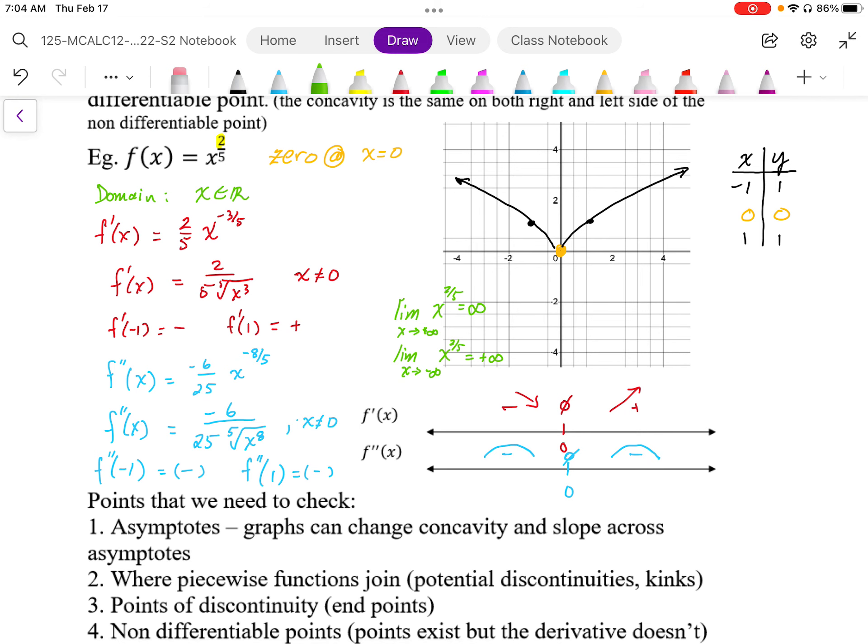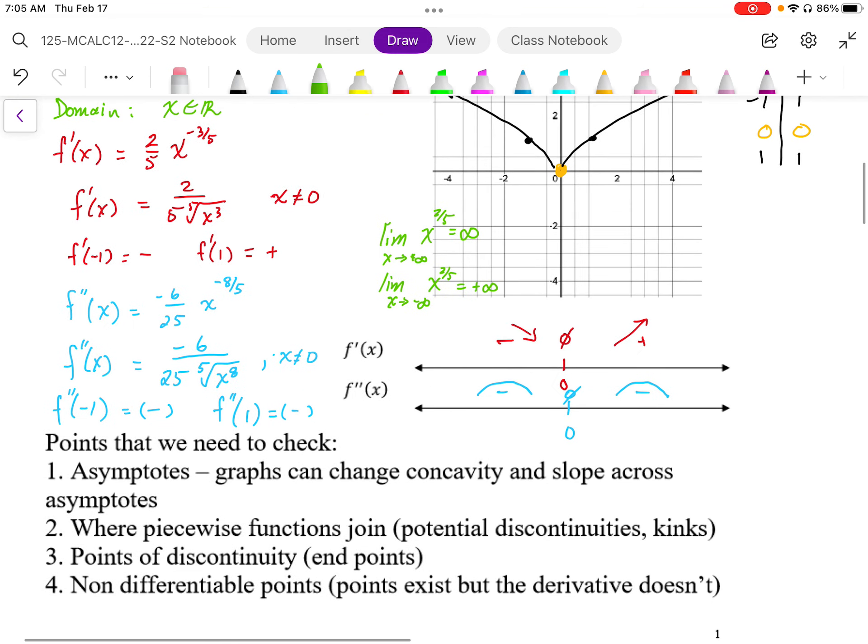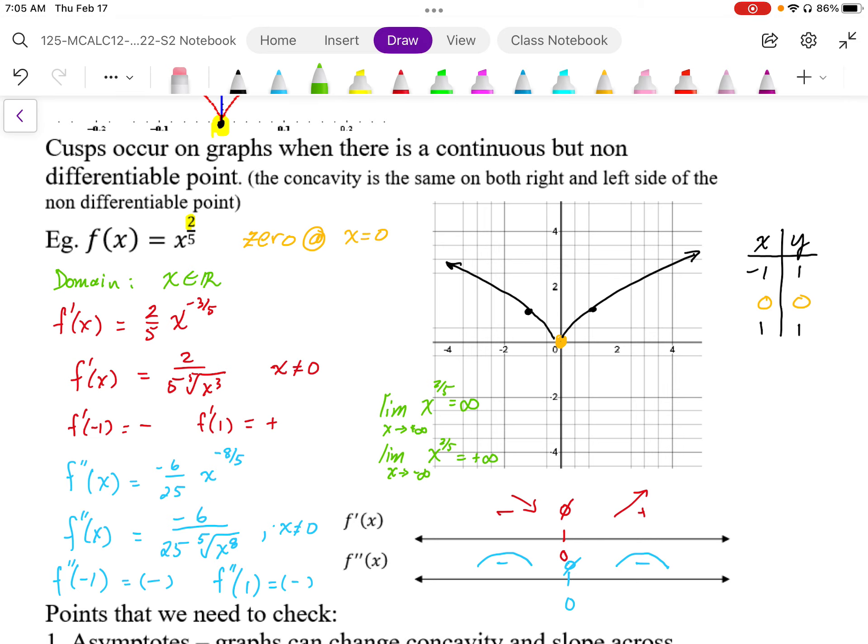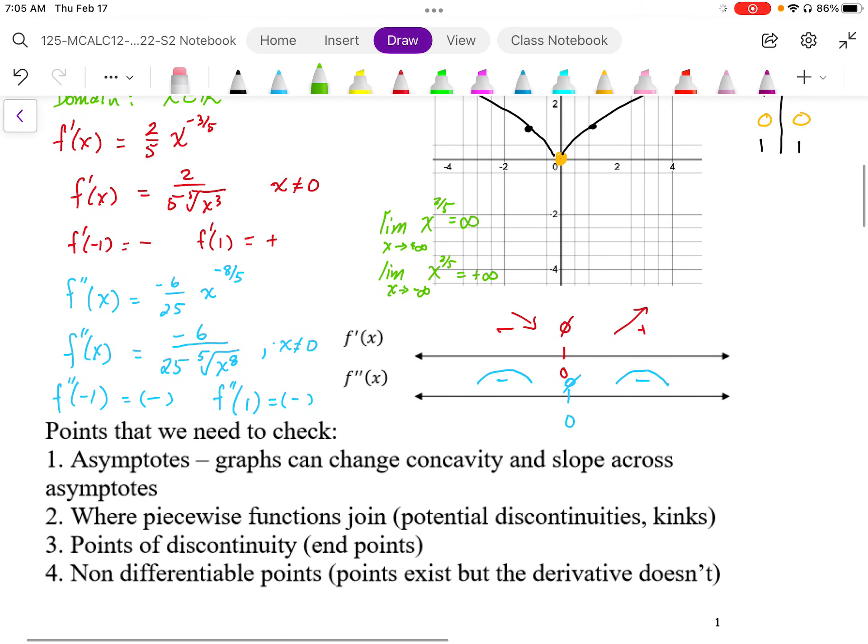We're now having to check for more detail on graphs. We have asymptotes that we have to check, where these non-differentiable points. We can change concavity across asymptotes. So sometimes we're going to be asked to check for the concavity on both sides. When we have piecewise functions, we have to worry about where the pieces join, what's happening at the boundary points. So any points of discontinuity, including endpoints, we have to always be checking and just making sure we understand what's going on. And then any non-differentiable points, we always have to check and test non-differentiable points. An example would be this cusp. We have a non-differentiable point at 0, and we ended up with a cusp at that point.